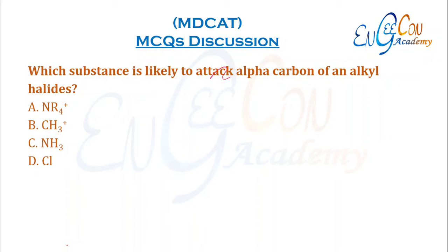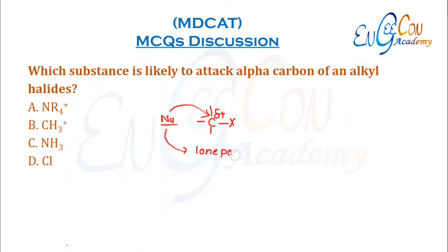Which substance is likely to attack the alpha-carbon of alkyl halides? The alpha-carbon of alkyl halides is electrophilic, so it is attacked by a nucleophile. A nucleophile is either a substance with a lone pair or a negatively charged species. NH3 contains a lone pair, so it can attack the alpha-carbon of an alkyl halide.